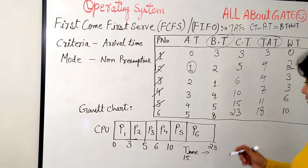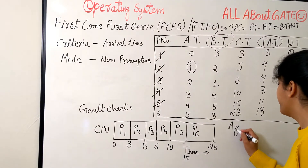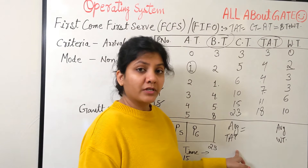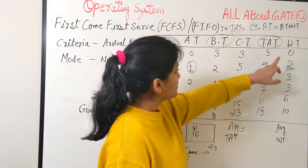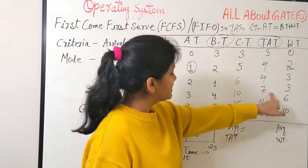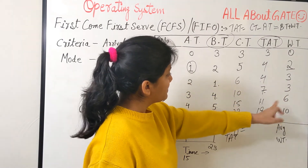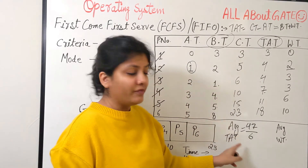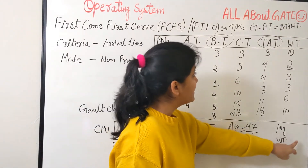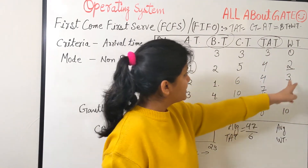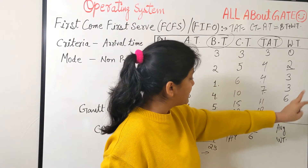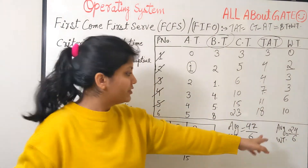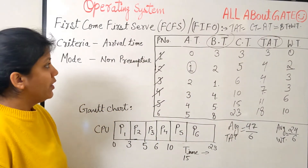The question usually asks for average turnaround time and average waiting time. Sum of turnaround times: 3+4+4+7+11+18 = 47; divided by 6 processes gives average TAT = 47/6. Sum of waiting times: 0+2+3+3+6+10 = 24; divided by 6 gives average waiting time = 24/6.